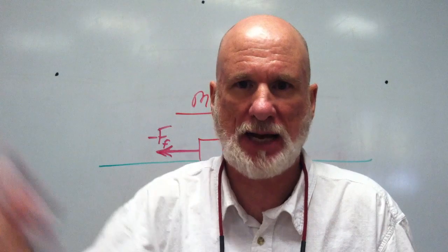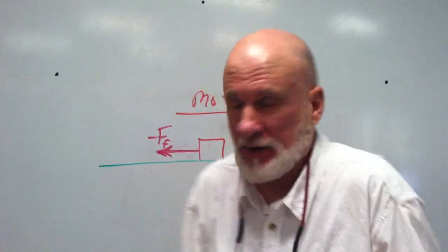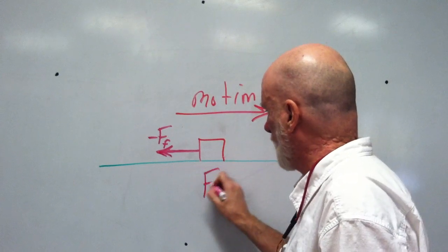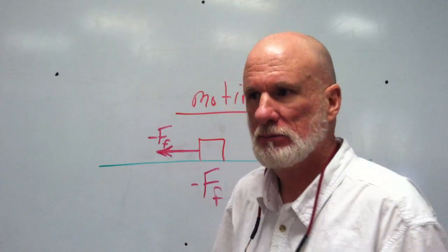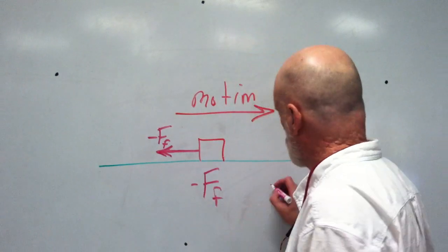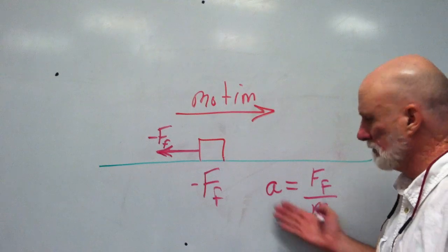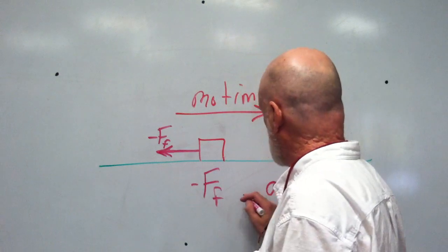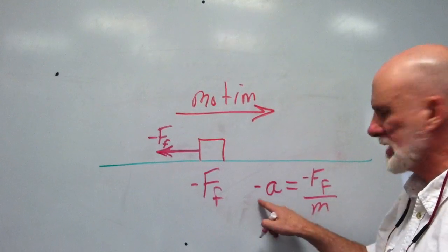But when you think of acceleration, everybody always thinks of increasing acceleration. But acceleration can be negative. So there's a negative acceleration — isn't it going to slow down? I'm going to have friction slowing down the card. It's going to be an unbalanced force. So I have A equals my friction over my mass, and I can tell you the acceleration is going to be negative.